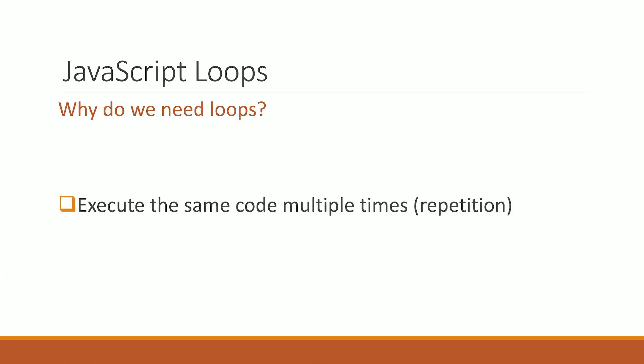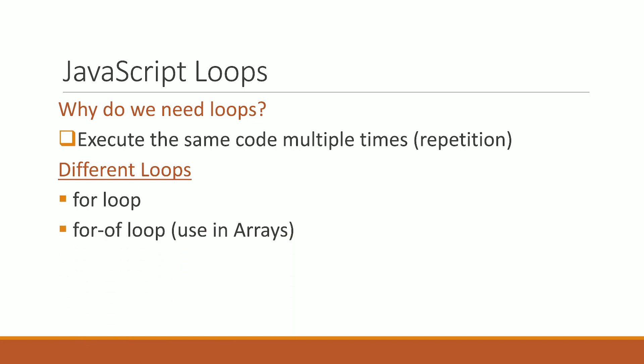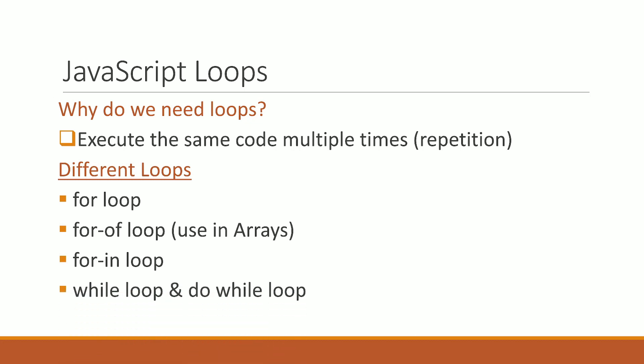Let's see how JavaScript loops work. Why do we need loops? To execute the same code multiple times for repetition. With loops we have: for loops, for...of loops for arrays, for...in loops for objects, and while and do...while loops.